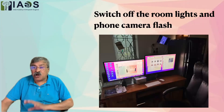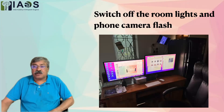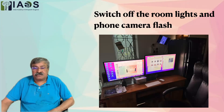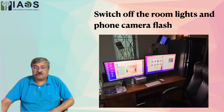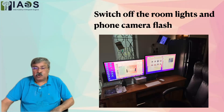Switch off the room lights and also switch off the phone camera flash. In the subsequent pictures the room may look bright because an iPhone 13 Pro Max was used, which is low-light adjusted and shows details even in low light. But theoretically you must switch off the room lights and the flash — only then will you be able to see the x-rays properly.